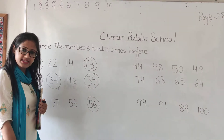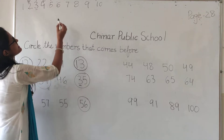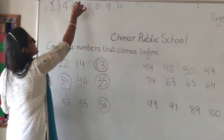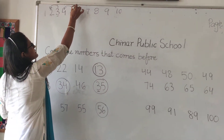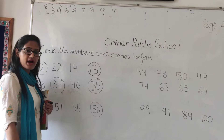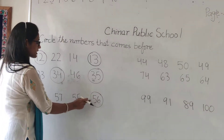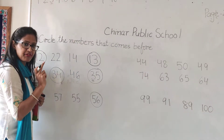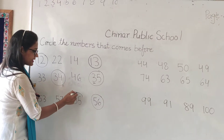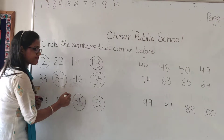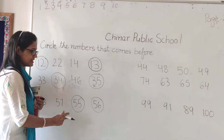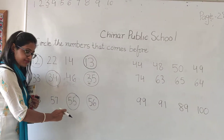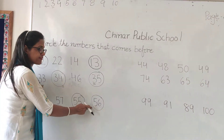Now it is 5, 6 — fifty-six. Look at number 6 — which number comes before 6? It is 5. So 5, 5 — fifty-five. Where is 55? It is 55. Before 56 comes 55.